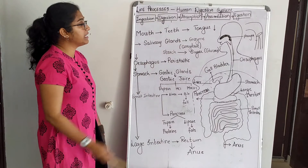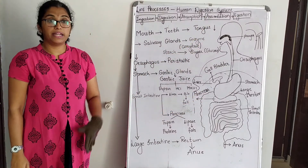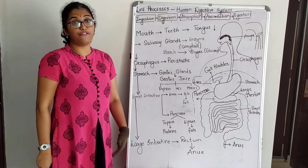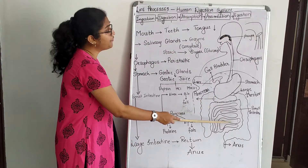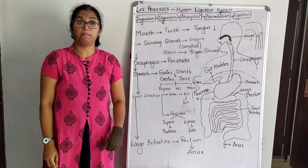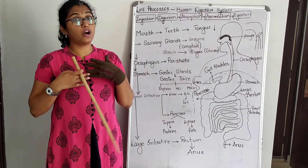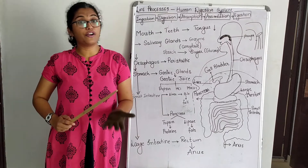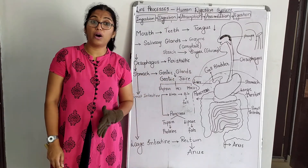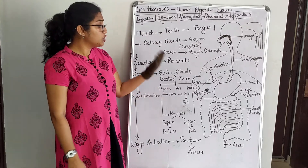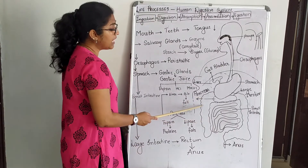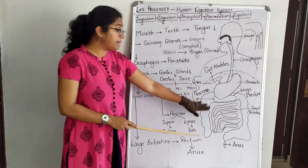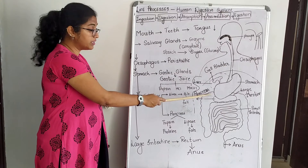The process of assimilation occurs as the food absorbed by the blood vessels is distributed to various parts of the body required for growth and repair. The part of the digested food not immediately utilized is stored in the liver in the form of carbohydrates called glycogen, which is used by the body whenever required. The undigested food is then pushed from the small intestine to the large intestine.